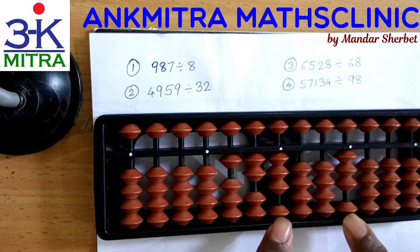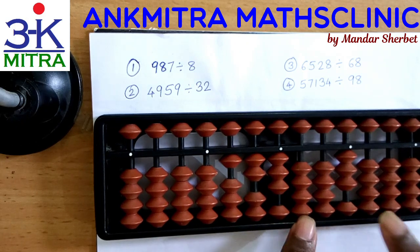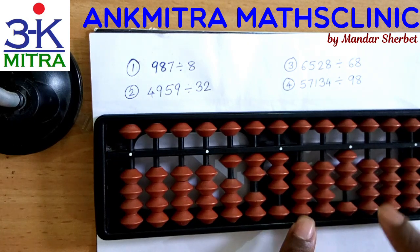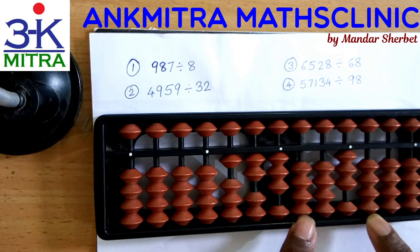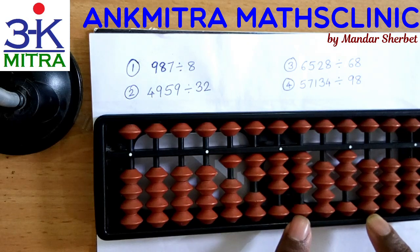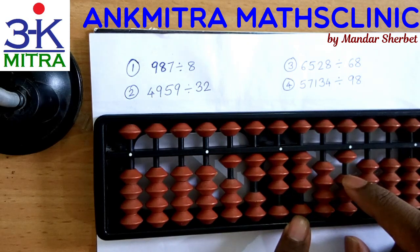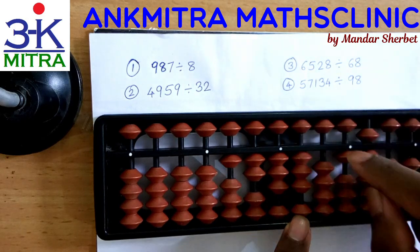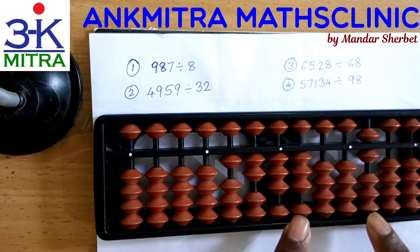So we'll move one rod further for both the question and the answer set. Now on the question set we have the number 33, with zero on this rod. From 30 we can subtract 3 times 8, so I'll take 3 on the answer set. 3 times 8 is 24, so I'll subtract 20 here, and for subtracting 4 I'll do plus 6 minus 10.